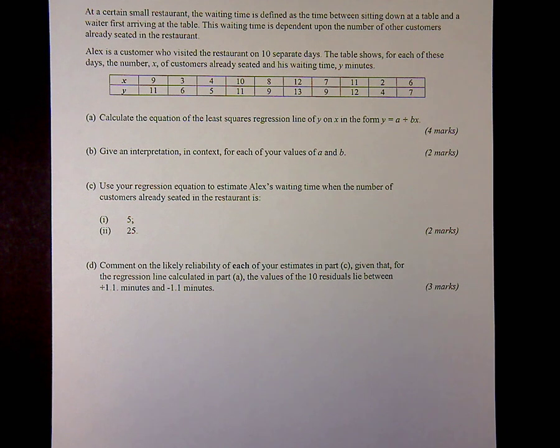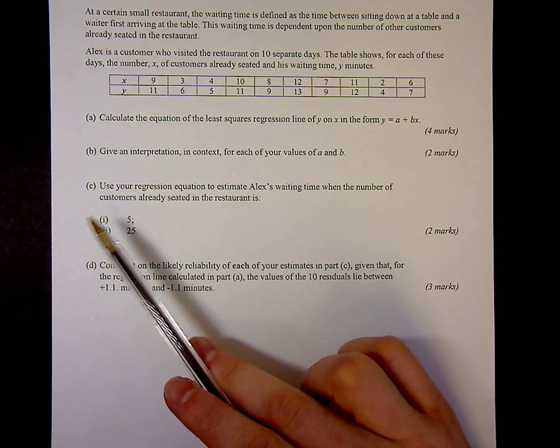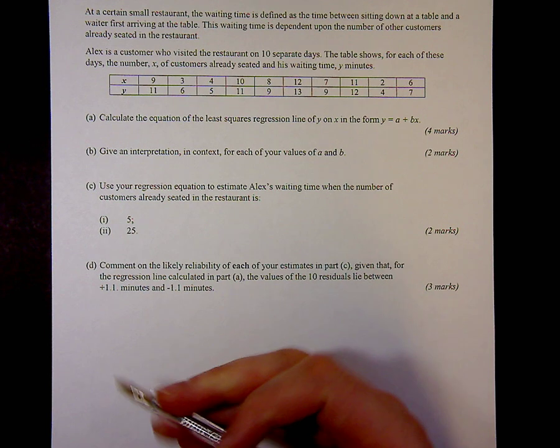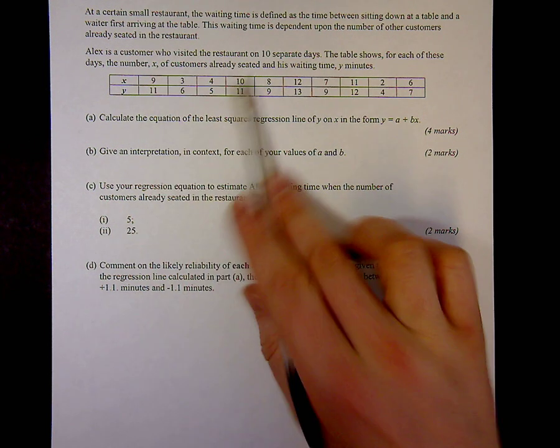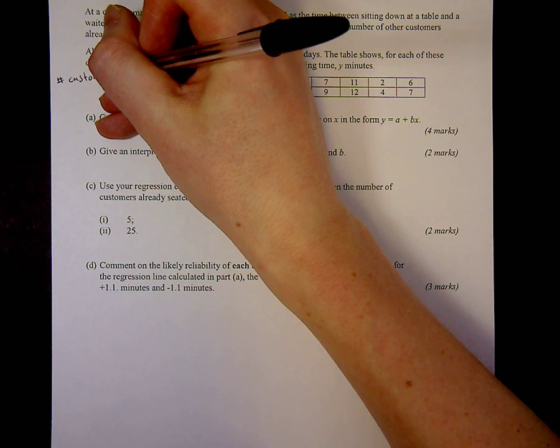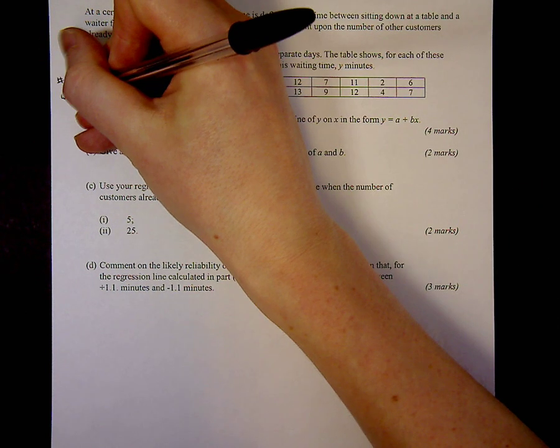This exam question is looking at the use of a least squares regression line. We give you some information about a small restaurant and Alex visits it on 10 separate days and reports the number of customers already seated, x, and the waiting time which is more variable.